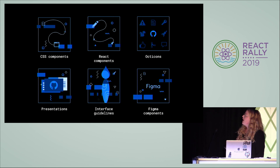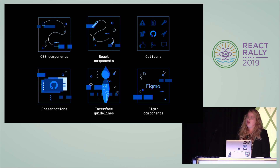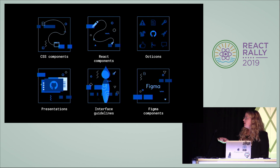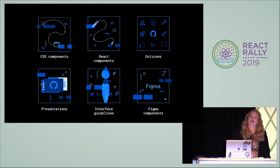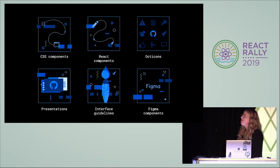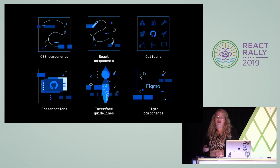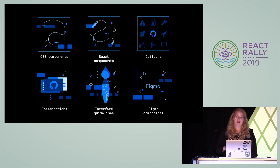This is our ecosystem at GitHub. We've got CSS components, React components, an icon library, presentations, interface guidelines, Figma components, and just recently we started working on some Rails components that are really cool. I'm not really covering that in my talk, but if you want to talk to me about that later, I love nerding out about that too.